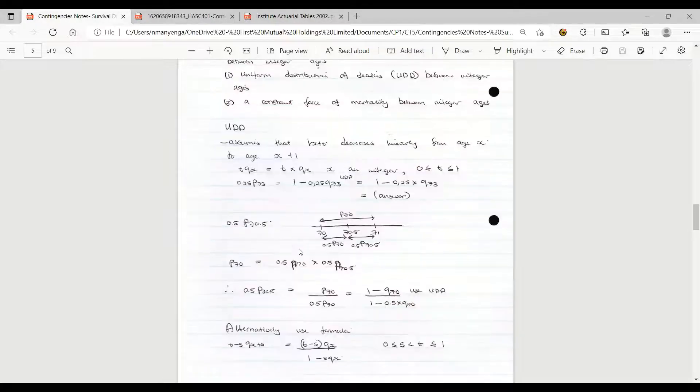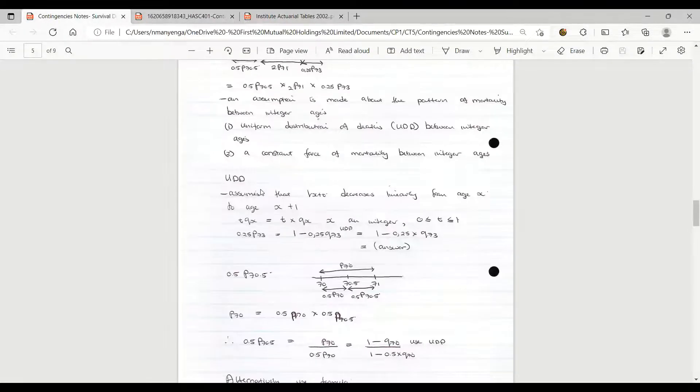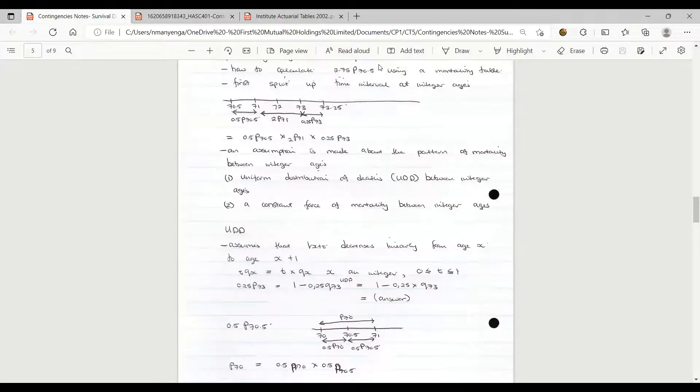To evaluate this probability, since we've split up this initial probability into three parts, we evaluate the last probability 0.25 P73 using this formula t times qx. 0.25 P73 is equivalent to 1 minus 0.25 Q73. Using the assumption that there is uniform distribution of deaths between the integer ages, this would be 1 minus 0.25 times Q73.